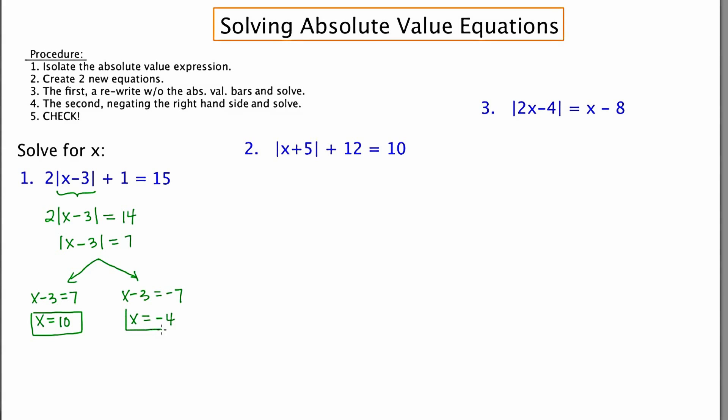So here are my two answers. Now I'm going to check them to make sure that they actually work. And to check, you're always supposed to go back to the original equation. So 10 - 3 is 7. The absolute value of 7 is 7, times 2 is 14, plus 1 is 15. So that checks.